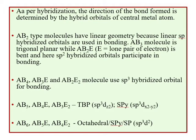For an AB2 type molecule with linear geometry, we use sp hybridized orbitals for bonding. For an AB3 type molecule, which is trigonal planar, and AB2E which has a lone pair of electrons giving a bent shape, we use sp2 hybridized orbitals.